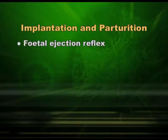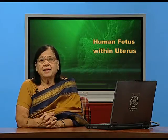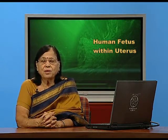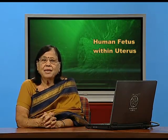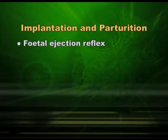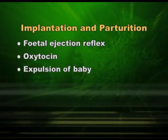You can see the fetal ejection reflex occurring in the uterine endometrium. The baby is in the uterus and the endometrium is keeping it safely inside. When oxytocin comes, it causes downward contraction of the uterus — this is called the fetal ejection reflex — which pushes the baby out through the vagina. Oxytocin also helps in milk ejection later. At the time of expulsion, stem cells present in the cord can be collected, preserved properly, and used later if required.